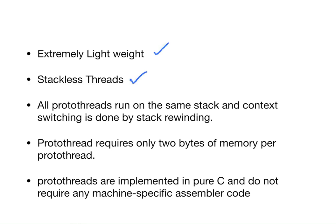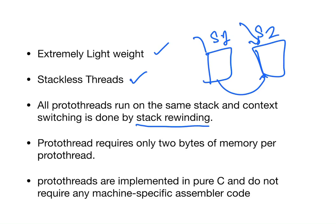All proto threads run on the same stack and context switching is done by stack rewinding. I have stack 1 and stack 2. The process is using this and another process is using this. Whenever I want to move from stack to stack, I use context switching. Context switching means one process will be in a suspended state till it completes the job. But in this case, since all of them are running on the same stack, the context switching is done by stack rewinding. Within the same stack I can use everything, that is why we call it stackless threads.